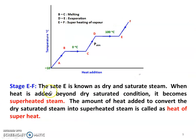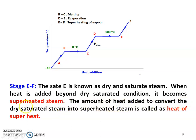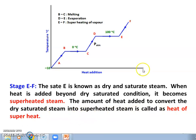Stage E to F: state E is known as dry saturated steam. When heat is added beyond the dry saturated condition, it becomes superheated steam. The amount of heat added to convert dry saturated steam into superheated steam is called the heat of superheat.